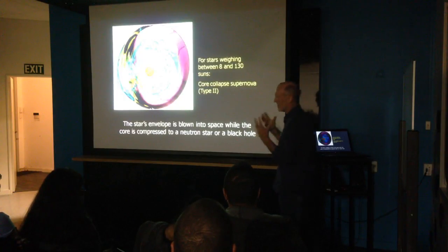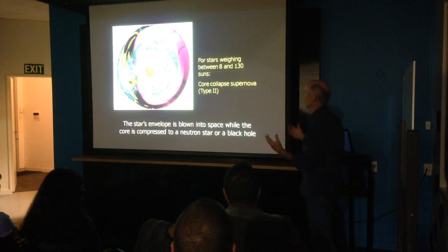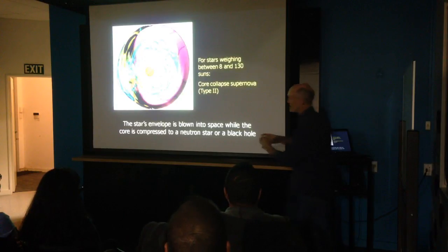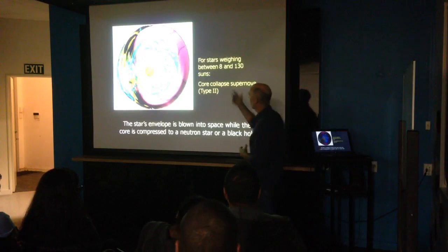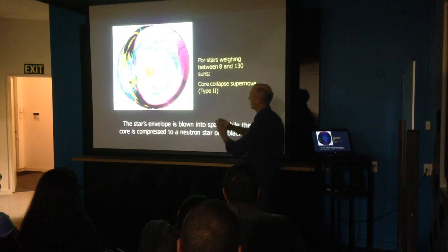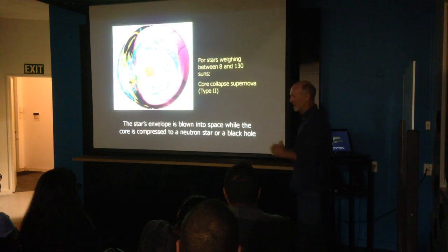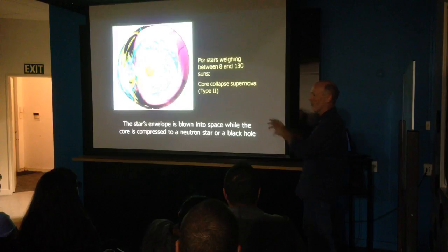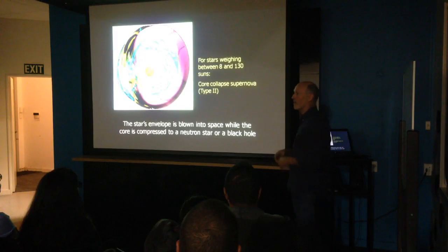These happen in young massive stars early in their lives — they go bang, leaving behind usually a neutron star, maybe a black hole in the centre, blowing off all their outer layers, releasing a huge amount of energy, and sending shockwaves through the local environment. They have a profound effect on the local environment when they explode.